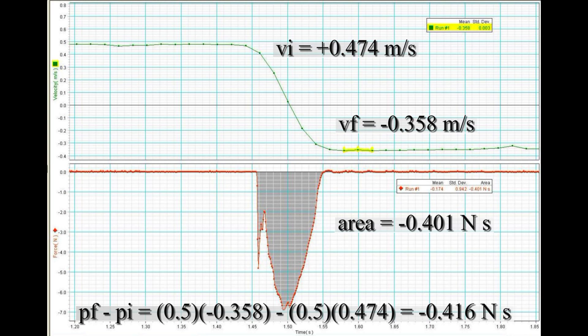In our case, the 0.5 kg mass is multiplied by the velocities to generate momenta, and the change in momentum is compared with the area under the force versus time curve.